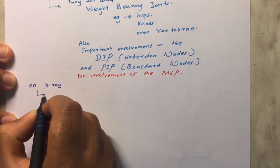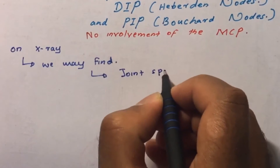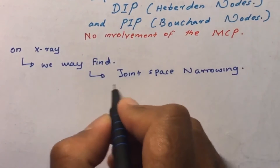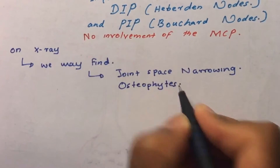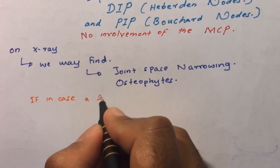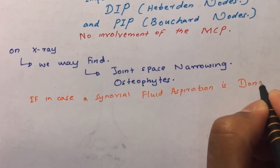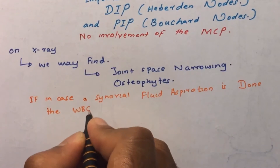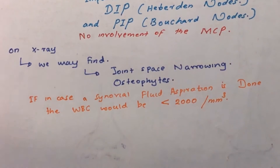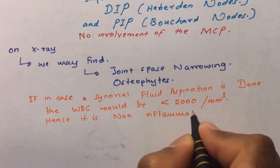On X-ray of a patient with osteoarthritis, we would see joint space narrowing but not ankylosis — ankylosis is most commonly seen in rheumatoid arthritis. We will mostly see osteophytes. If a synovial fluid aspiration has been done, the white blood cell count would always be less than 2000 per millimeter cube, confirming this is a non-inflammatory process.